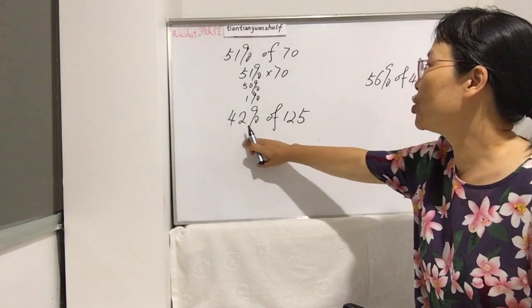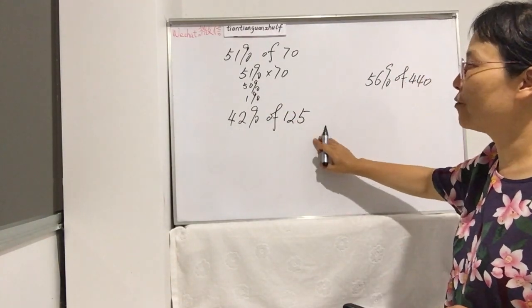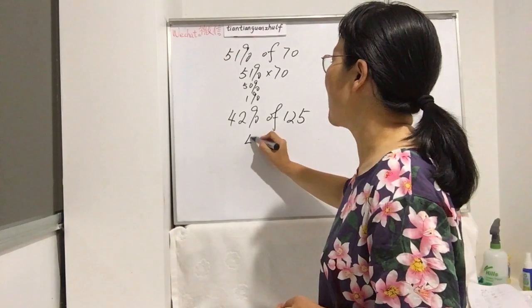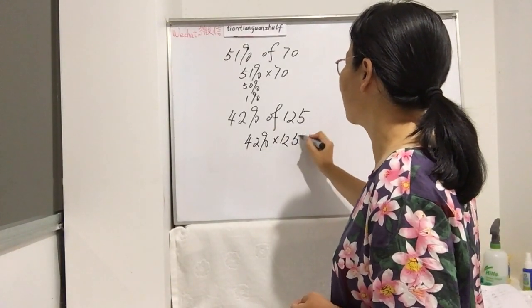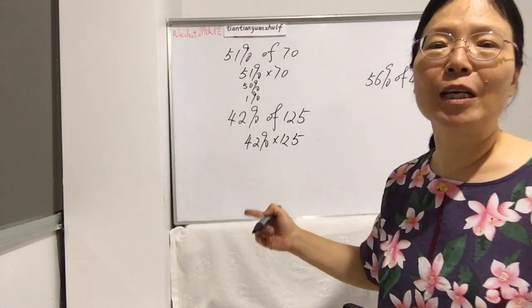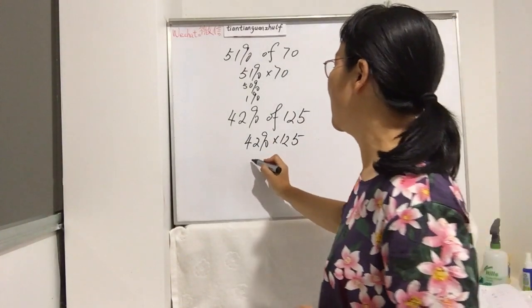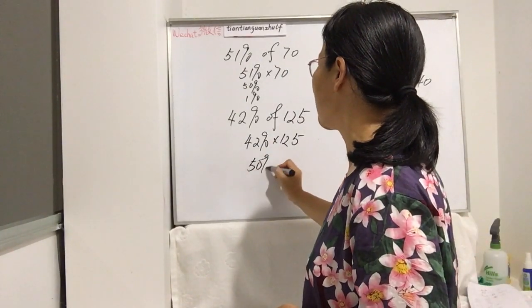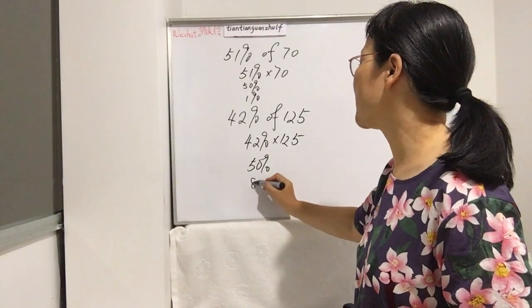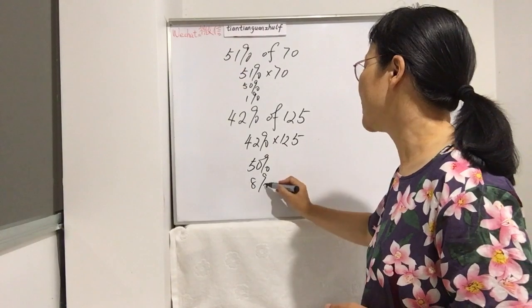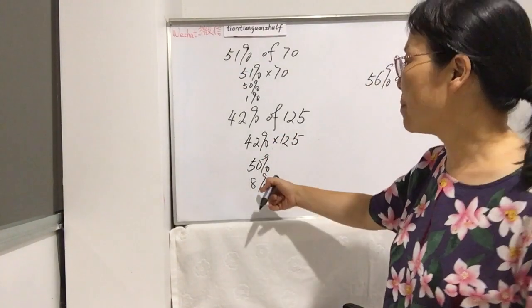What's the answer? 42% of 125—this has two ways of thinking. One is you can think about 50% minus 8% equals 42%.